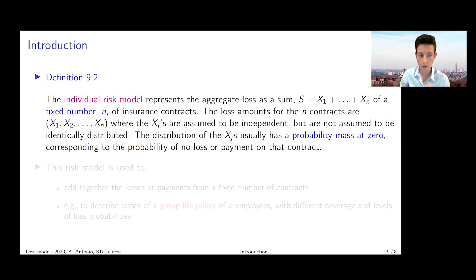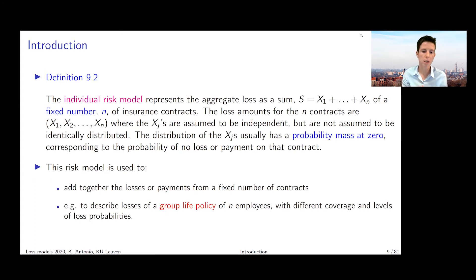If you look at the individual risk model, that represents the aggregate loss once again as a sum S, but now it's not a compound sum. It is X₁ + X₂ + ... + Xₙ. We have a fixed number n of insurance contracts. The loss amounts for these n contracts are denoted with X₁ up to Xₙ. We assume the Xⱼ's to be independent but they're not assumed to be identically distributed, and they can have a probability mass at zero which would then correspond to the probability of no loss or payment on a particular contract.